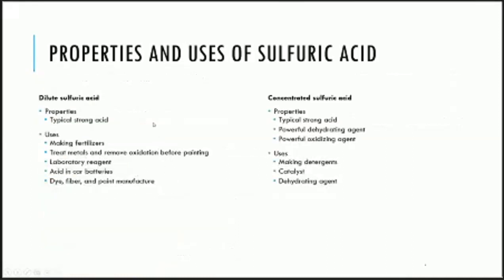The properties and uses of sulfuric acid: when we think about dilute sulfuric acid, despite the fact that it's dilute, it's still a very strong acid and it will show characteristics of typical strong acids. Strong acids are acids that completely ionize in aqueous solution, and they have characteristic acid-like reactions with metals, with bases, and so on. The general uses of dilute sulfuric acid would be to make fertilizers, treat metals and remove oxidation before painting, laboratory reagents, acid in car batteries, and dye, fiber, and paint manufacture.